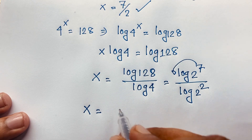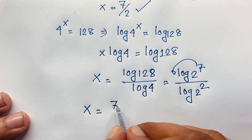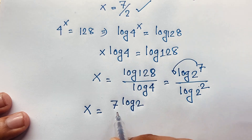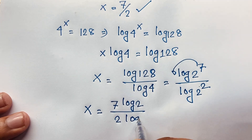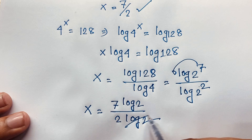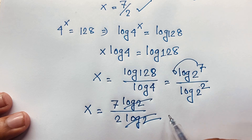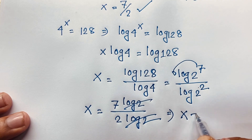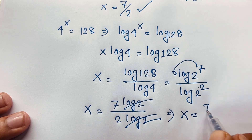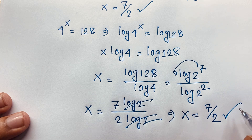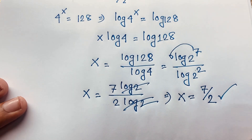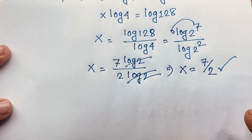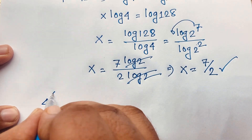Applying the log exponent rule, the exponents move out front: x = 7·log 2 over 2·log 2. The log 2 terms cancel out, and we again find x is equal to 7 over 2.